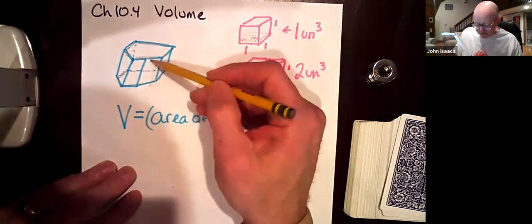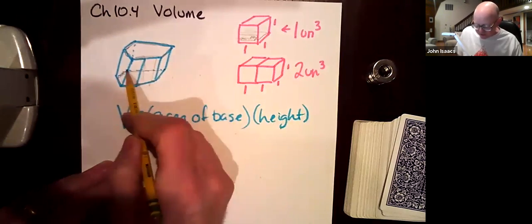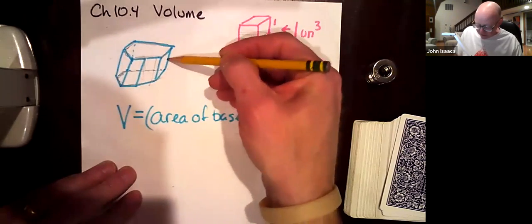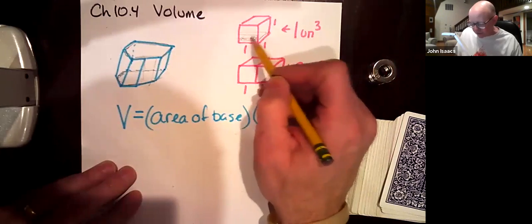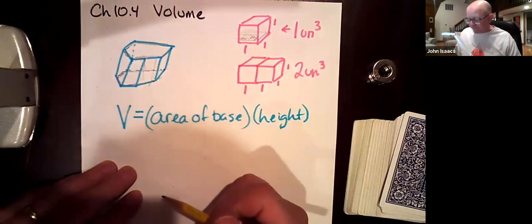as long as the base and the top are the same, then these heights, this is just a height measurement. So we basically have this base, the area of this base being repeated this many times in height, just like this layer of little cubes gets repeated 12 times to fill up the whole foot by foot by foot cube.